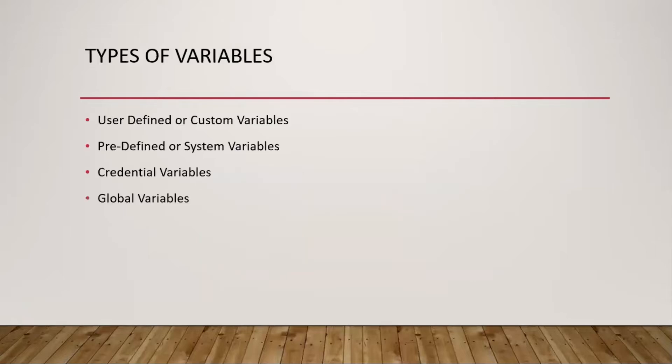In Automation Anywhere, we have four types of variables: user-defined or custom variables, predefined or system variables, and two more types from the control room side - credential variables and global variables.